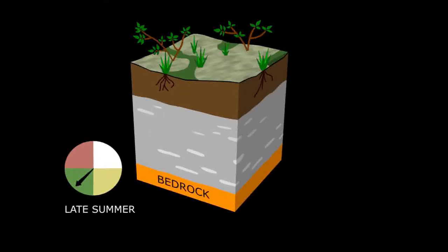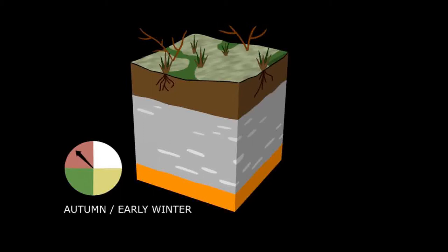In autumn and early winter, the active layer starts to freeze, both from the bottom upwards and from the top downwards.